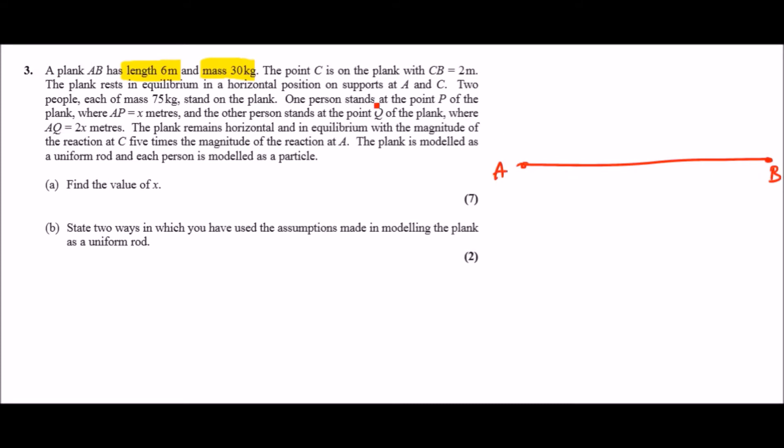We know that it's 6 meters long. The plank is modeled as a uniform rod, so this means that the center of mass is bang in the middle and it's of course a mass of 30 kg. So 30g and a distance of 3 meters away from A and B. Now we also know there's another thing at point C, so point C is 2 meters away from B. So somewhere around here, and let's call this C. It's practically 4 meters away from A.